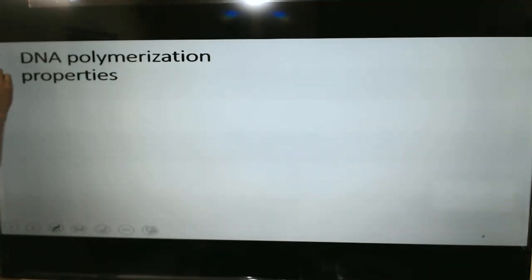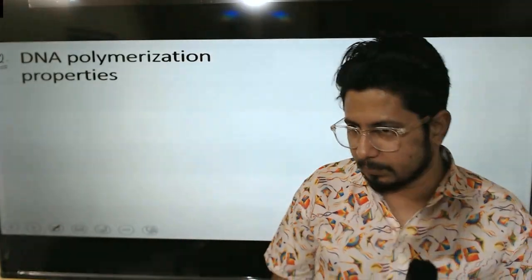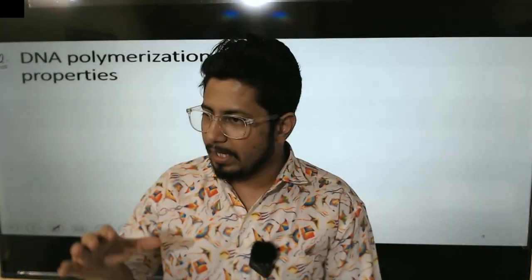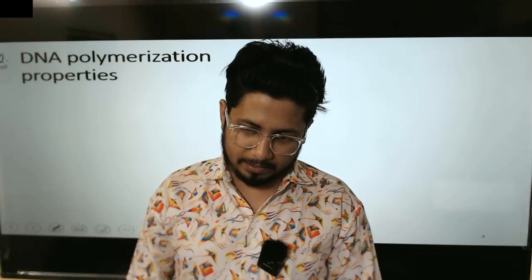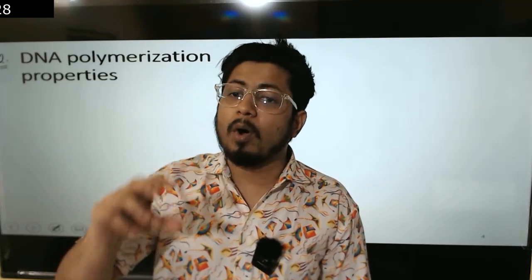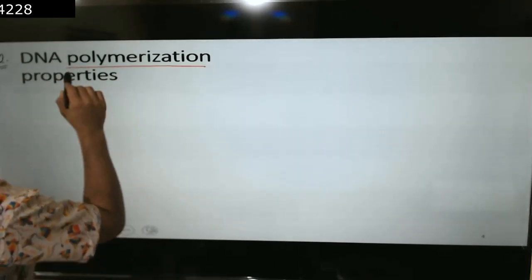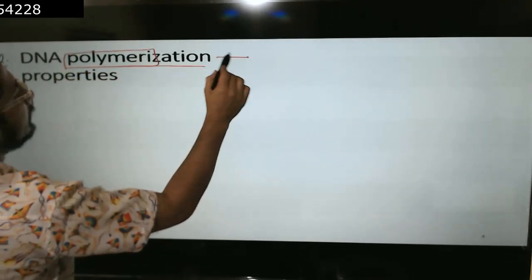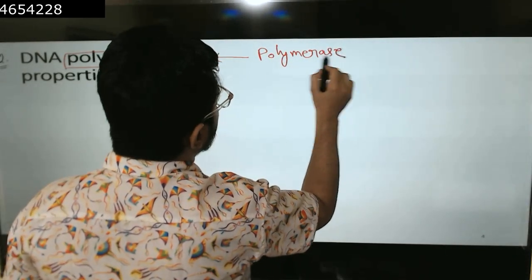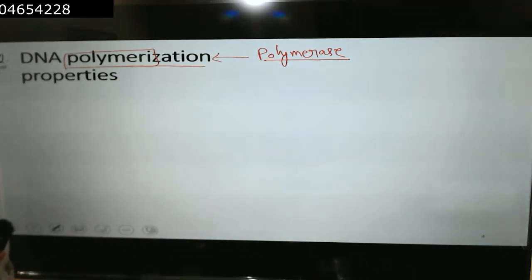We intend to talk about DNA polymerization properties. Before going into the detail of the DNA replication process, you need to know the key enzyme for DNA replication in prokaryotes as well as in eukaryotes — that enzyme is DNA polymerase. It is a polymerase enzyme, and polymerase enzymes do polymerization — specifically, DNA polymerization.